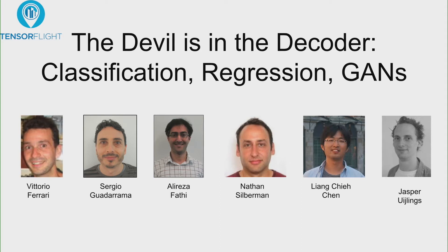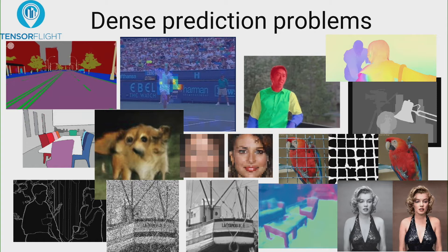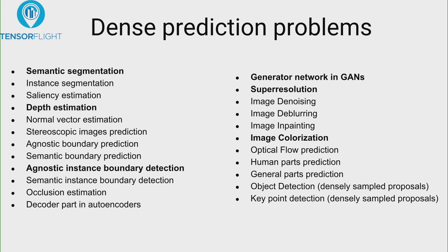Let me start from one of the latest projects: 'The Devil in the Decoders,' done with friends from Google. Dense prediction problems — requiring per-pixel prediction or understanding — are very common in computer vision. This includes a broad range of problems like semantic segmentation, human part keypoints, denoising, colorizing, surface normal estimation, depth prediction, and more. Most useful 2D computer vision problems are per-pixel.